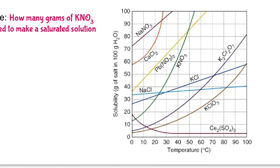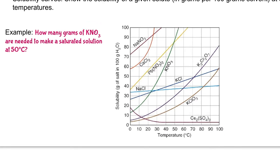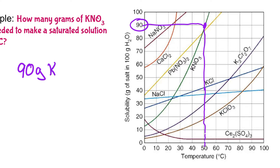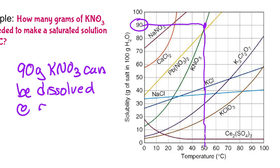At any point along that curve at a given temperature, the solution is saturated. To find the answer at 50 degrees Celsius, we go up to 50 degrees and find where it intersects the KNO3 line. Going across, it tells us 90. So 90 grams of KNO3 can be dissolved at 50 degrees Celsius. If you try to dissolve more than 90 grams, it won't dissolve. If you dissolve less than 90 grams, it will still be an unsaturated solution.